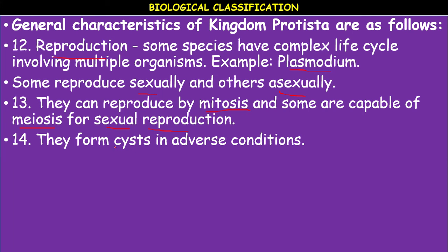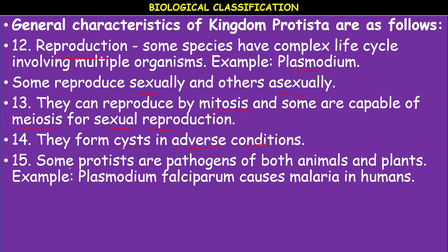Protista form cysts. When conditions are unfavorable — such as non-availability of food, high temperature, acidity, or salinity — they form a cyst over their body to protect themselves. This process is called encystation.